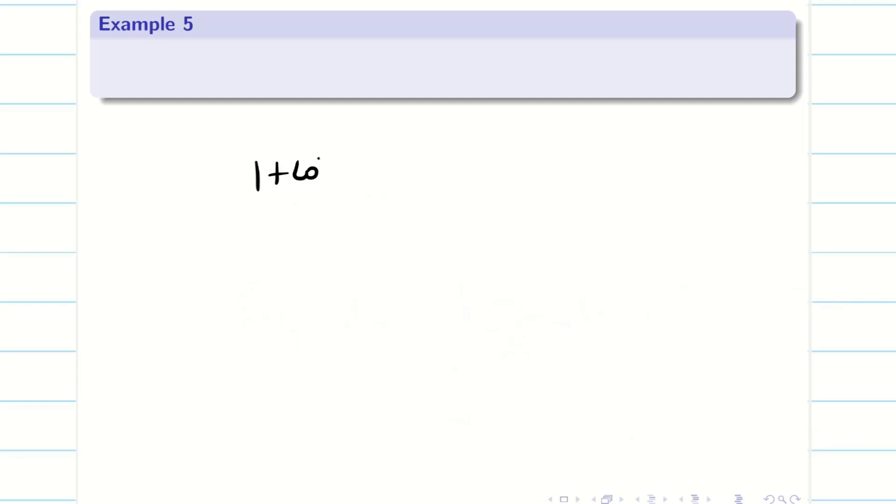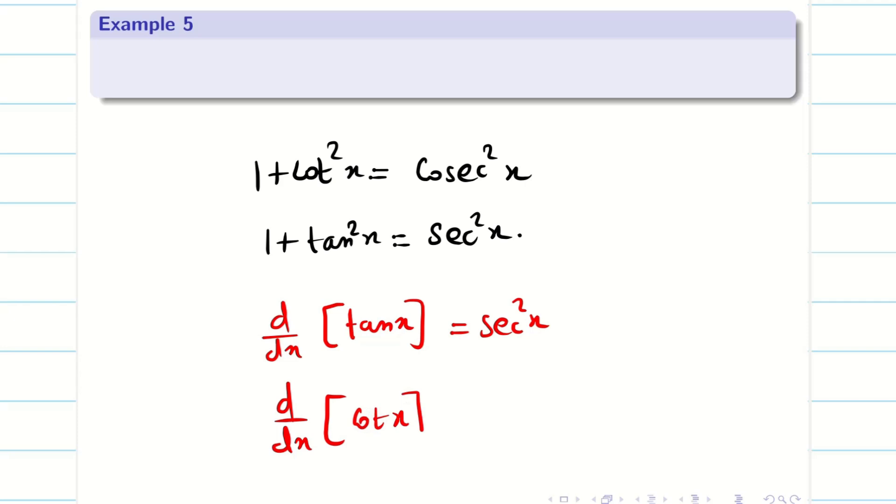And then we remember 1 + cot² x = cosecant² x, 1 + tan² x = secant² x. Differentiation of tan x is secant² x, and differentiation of cot x is minus cosecant² x. These are all the basic things which we use in these problems.